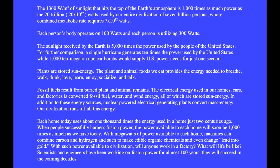The 1360 watts per square meter of sunlight that hits the top of the Earth's atmosphere is 1,000 times as much power as the 20 trillion watts used by our entire civilization of 7 billion persons, whose combined metabolic rate requires 7 trillion watts. Each person's body operates on 100 watts and each person is utilizing 300 watts. The sunlight received by the Earth is 5,000 times the power used by the people of the United States. For further comparison, a single hurricane generates 10 times the power used by the United States, while 1,000 ten megaton nuclear bombs would supply U.S. power needs for just one second.